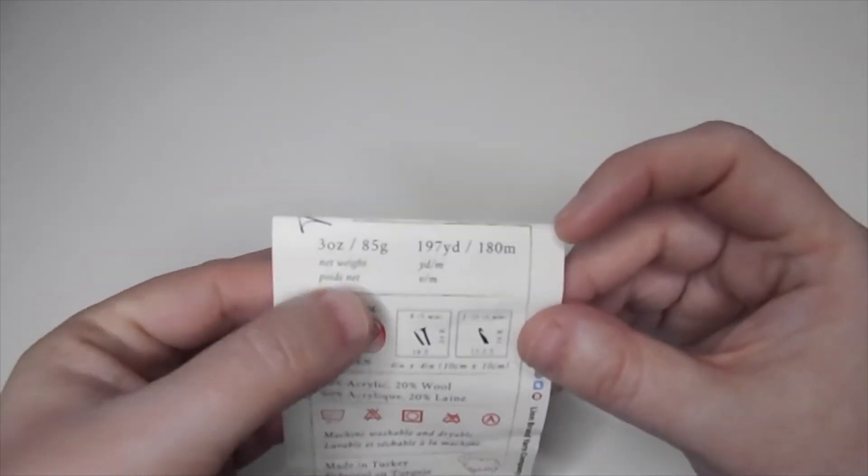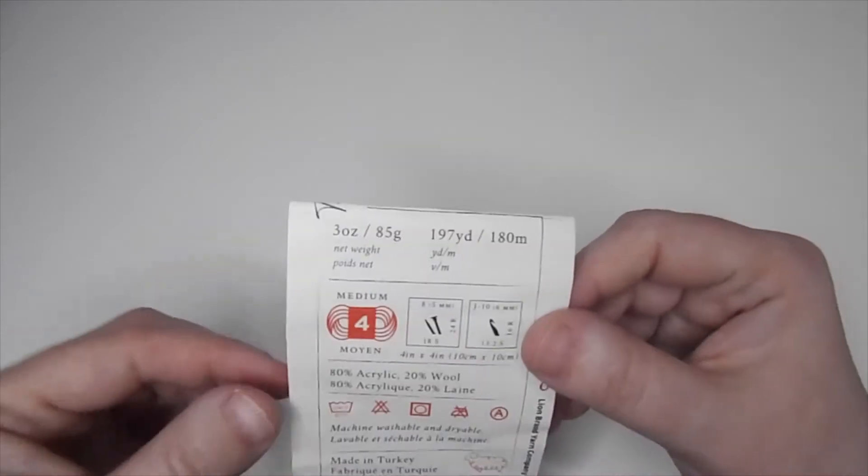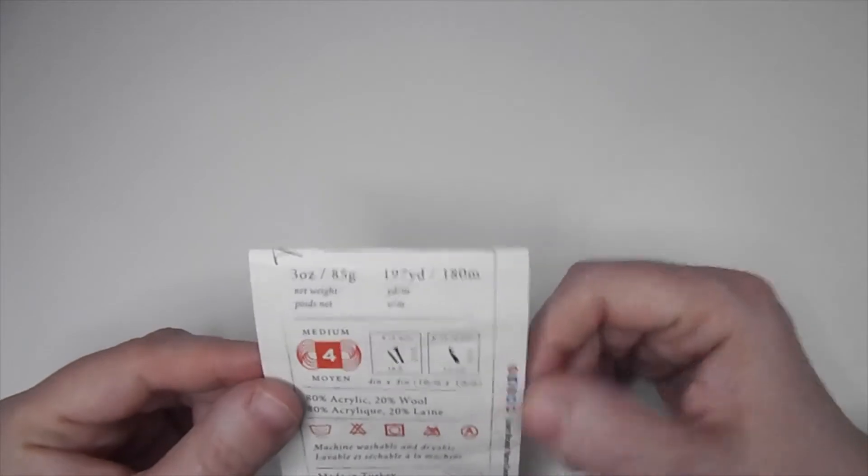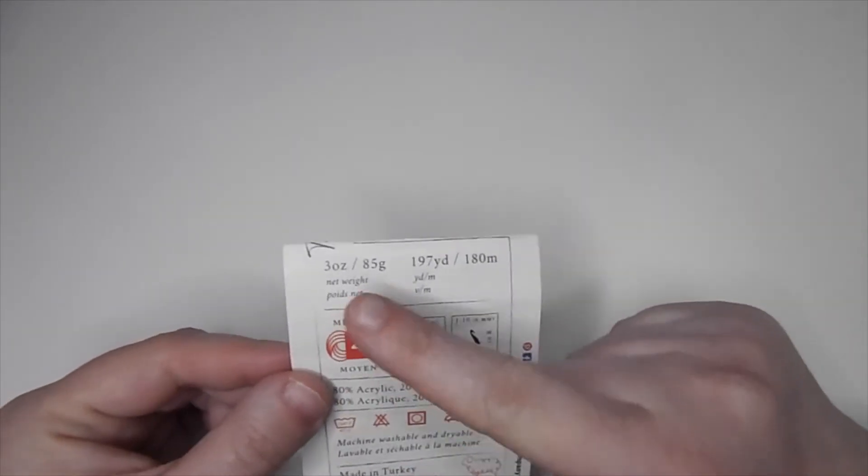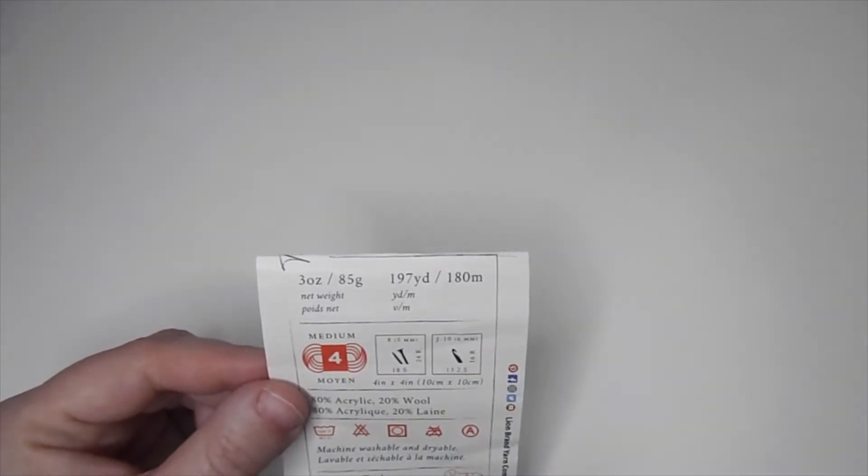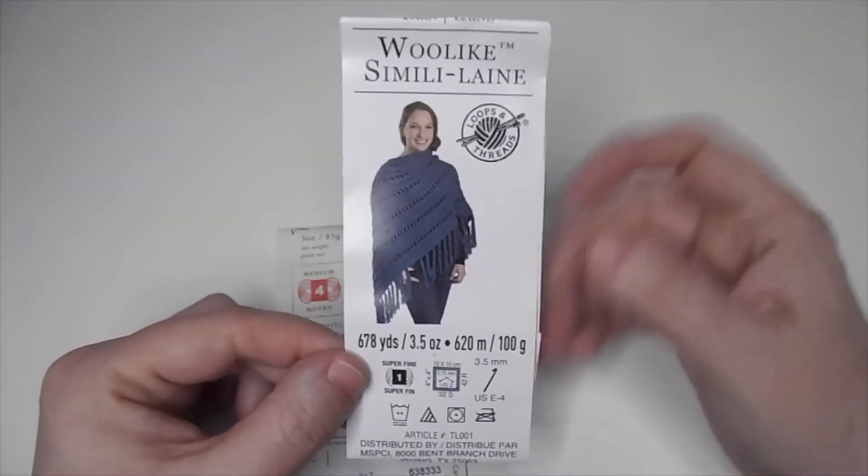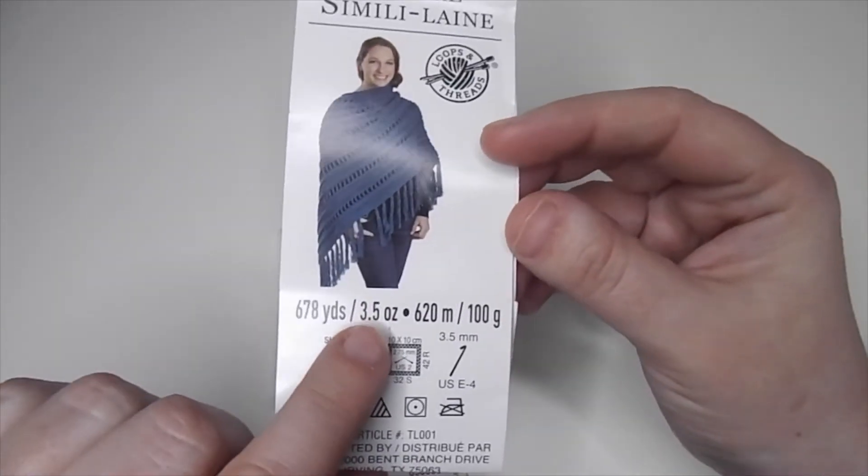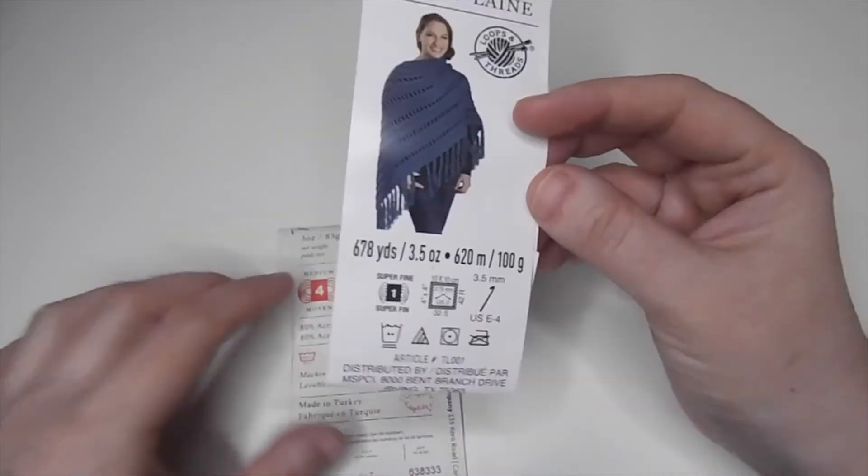First, here you have the weight and the yardage. If you're making a shawl or garment and you want information about it, you can go there. And if you look at this one, this is Woolike from Loops and Threads. You also have here the information on yardage and weight.